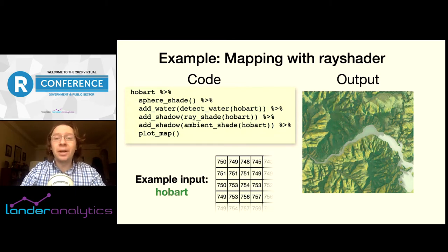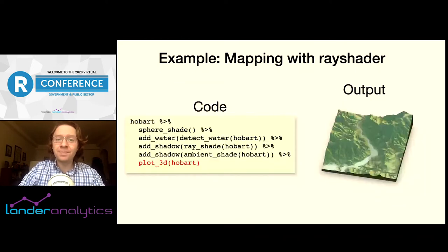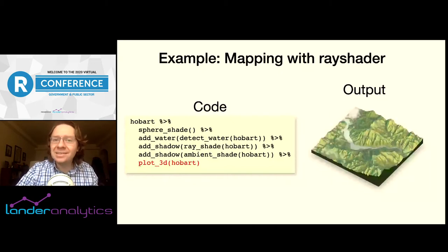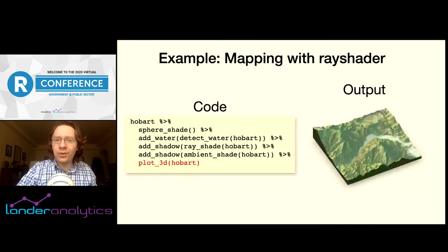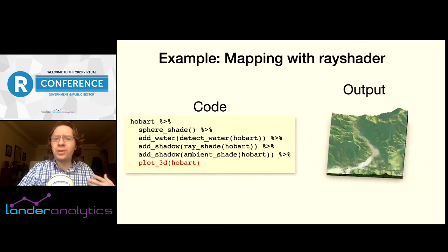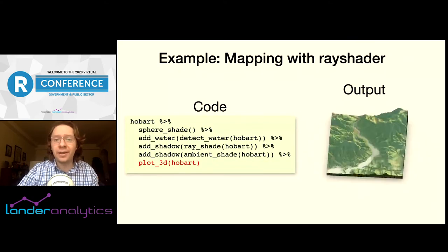The real magic with RayShader is how easy it is to transform this map into 3D. We simply take this output and pass it along to the plot_3d function along with the original matrix of height values. This function generates the 3D mesh represented by the Hobart matrix and paints the surface of it with the output of everything above. You can generate either still snapshots of the map with the render_snapshot function or call the render_movie function to generate a spinning 3D GIF like this.